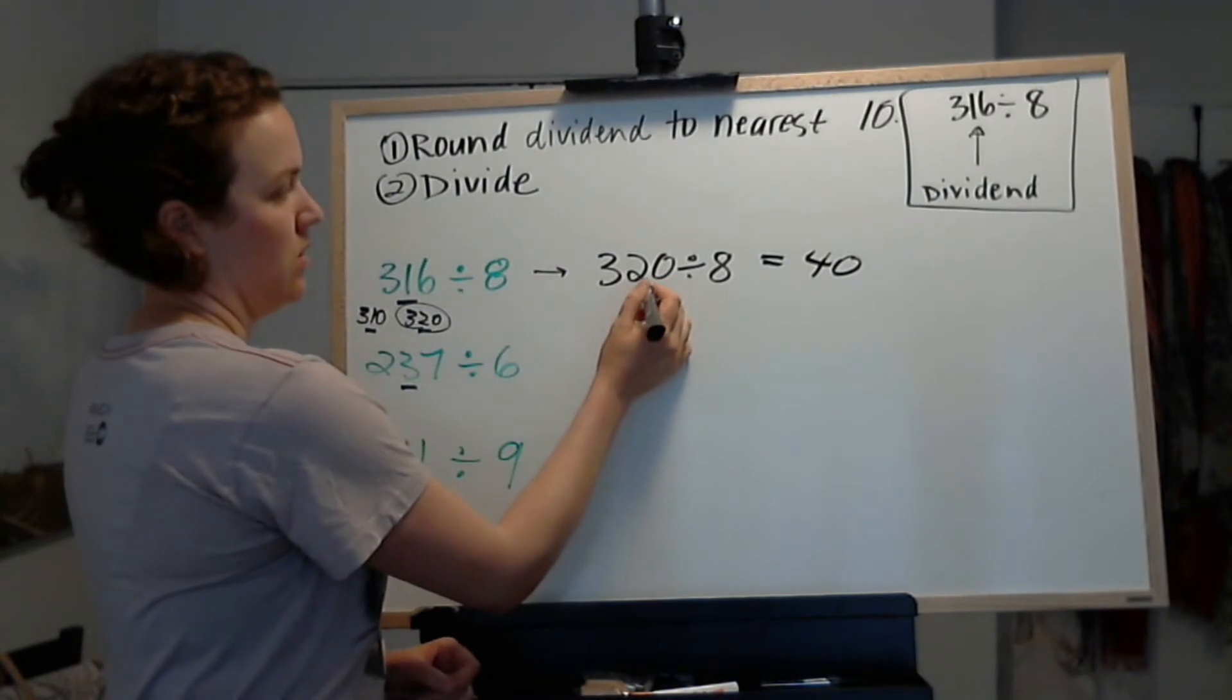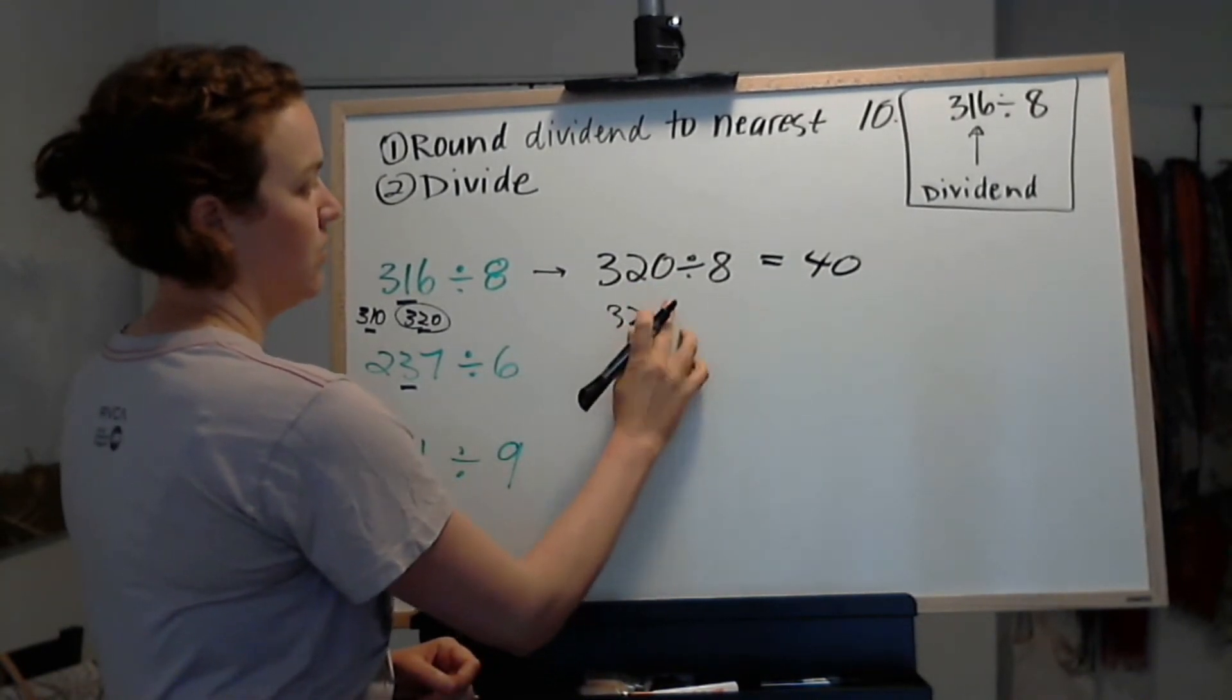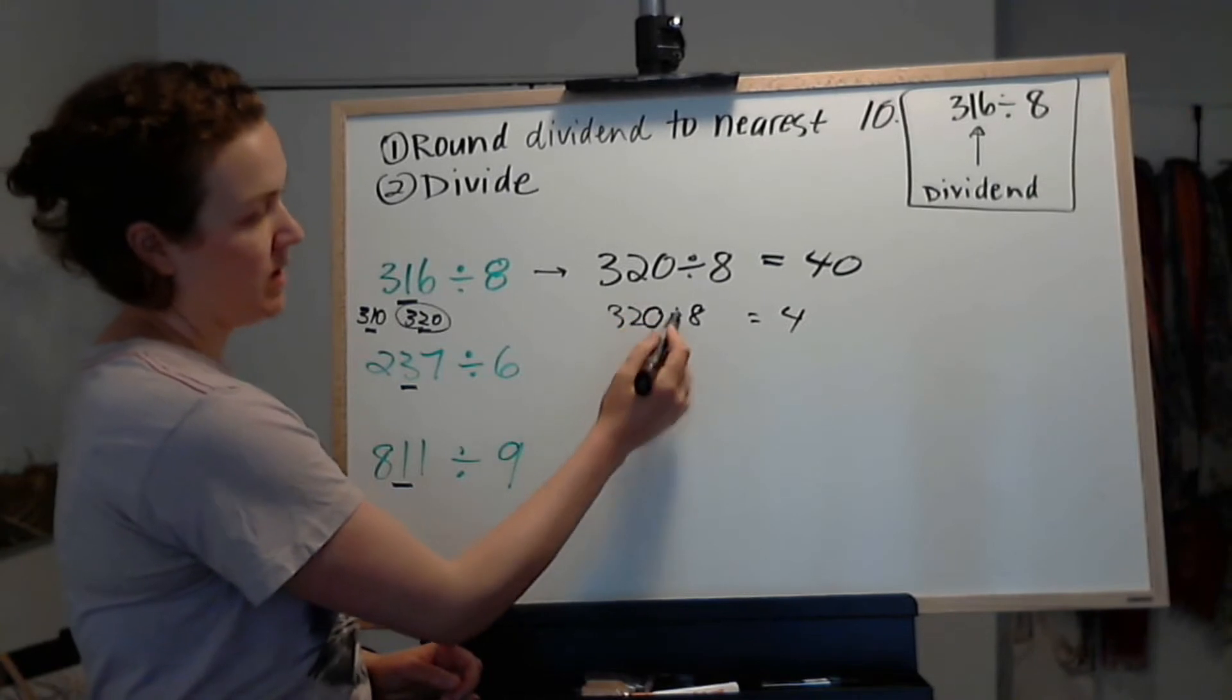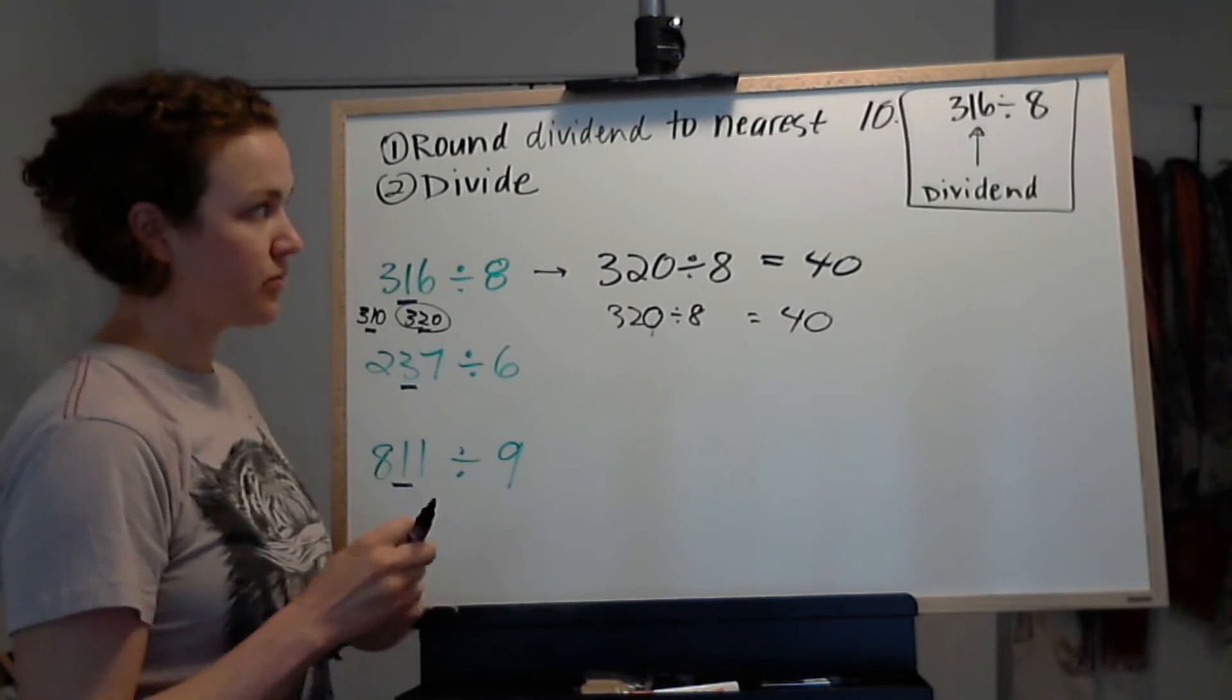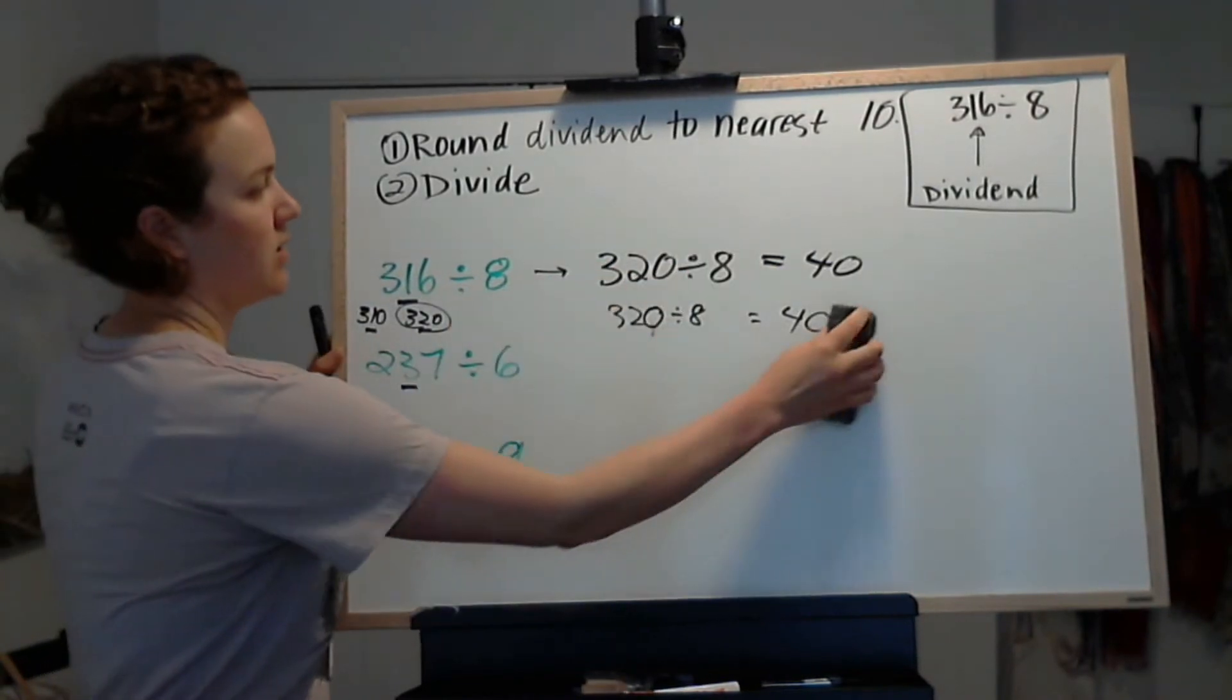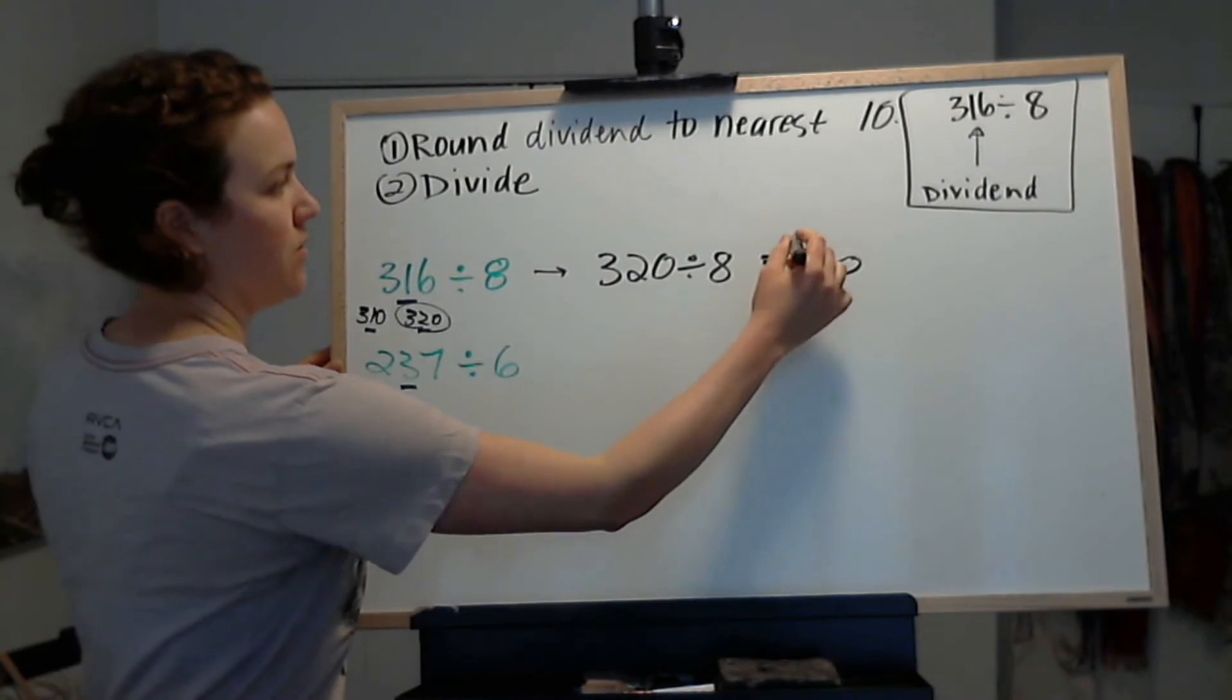And then, if we were doing 32 divided by 8, the answer would be 4. But we're dividing 320 divided by 8, which is 10 times as much. So the answer also has to be 10 times as much. So the approximation is 316 divided by 8 is approximately 40. That's our answer for the first question.